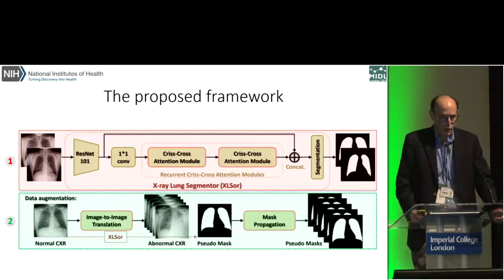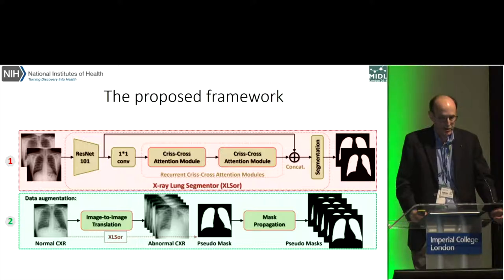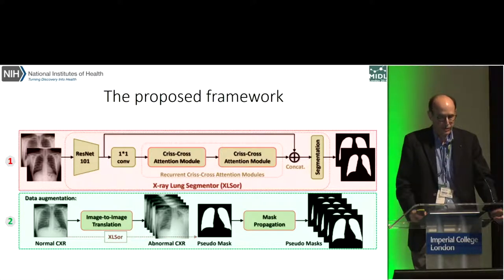In the bottom row, we use data augmentation using a GAN-based method called MUNIT that does image-to-image translation, and it generates radiorealistic abnormal chest radiographs. The labels, the masks from the normal version of the radiograph are then propagated to the generated abnormal radiograph and then used for subsequent training.